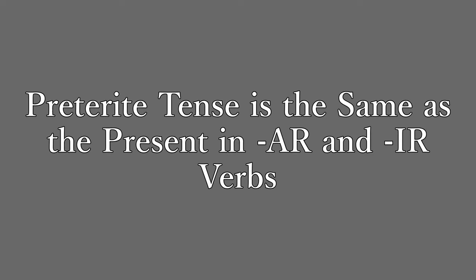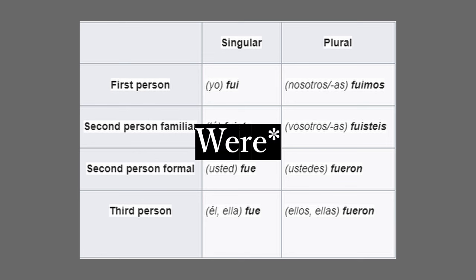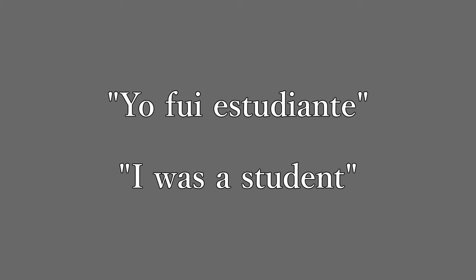Note that the preterite of nosotros in AR and IR verbs is the same as the present tense. Using the verb ser in the preterite: yo fui (I was), tú fuiste (you were), usted fue (you were formally), él/ella fue (he/she was), nosotros fuimos (we were), vosotros fuisteis (you all were), ustedes fueron (you all were), ellos/ellas fueron (they were). An example: yo fui estudiante — I was a student.